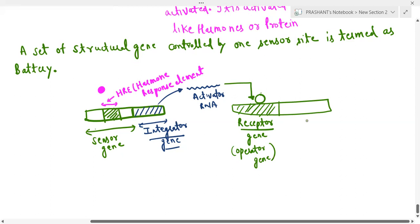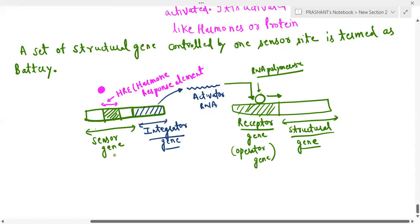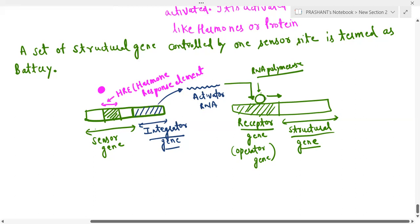The gene whose main role is in producing functional protein through transcription — that is the structural gene. The structural gene's transcription can happen when RNA polymerase moves forward and carries out transcription of the structural gene. So for this, the sensor gene starts the entire process: it binds the hormone acting as a transcription factor, then activates the integrator gene, the integrator gene produces activator RNA, and after that the receptor gene is also activated and binds RNA polymerase, which then moves forward toward the structural gene for transcription.